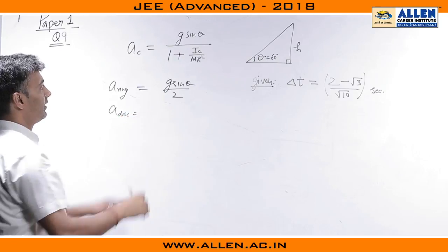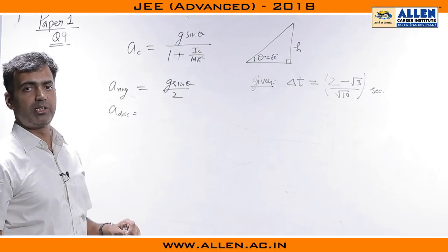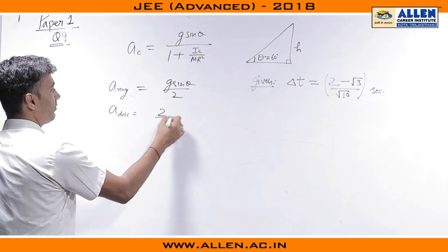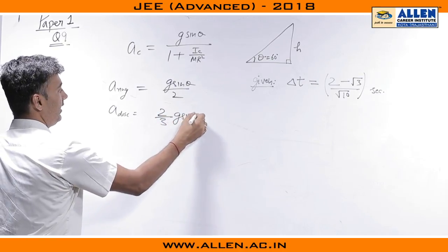For a disc on the other hand, Ic being MR square by 2, the acceleration comes out to be 2 by 3 g sin theta.